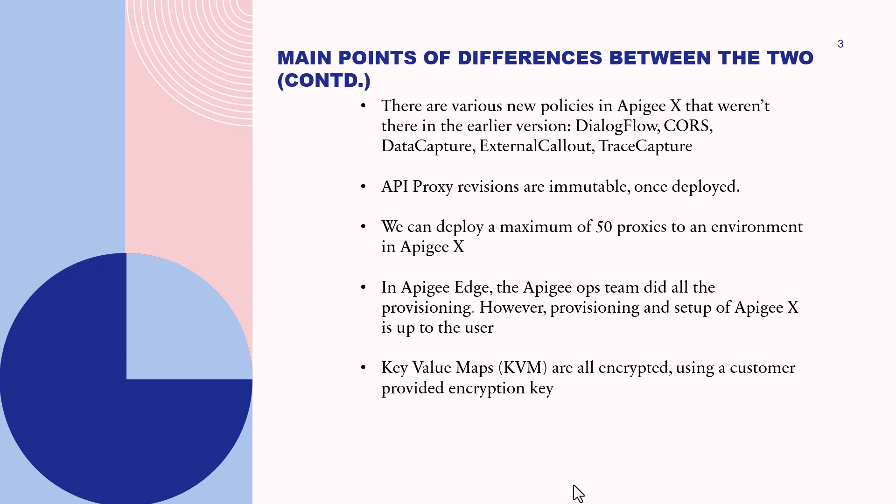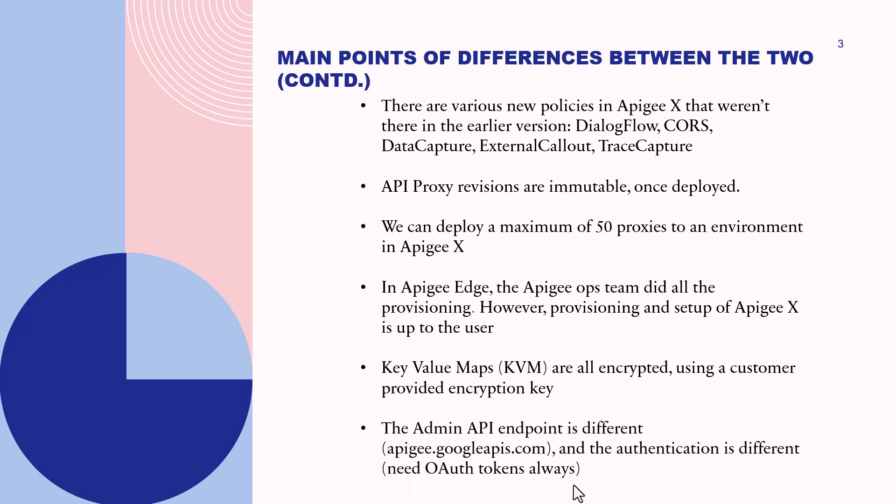Key value maps (KVMs) are all encrypted in Apigee X using a customer-provided encryption key. The admin API endpoint is different — it is apigee.googleapis.com in Apigee X. Authentication is also different: you need OAuth tokens always.